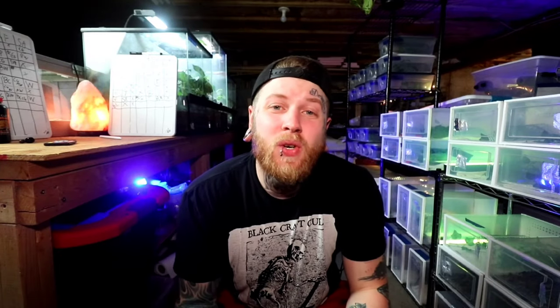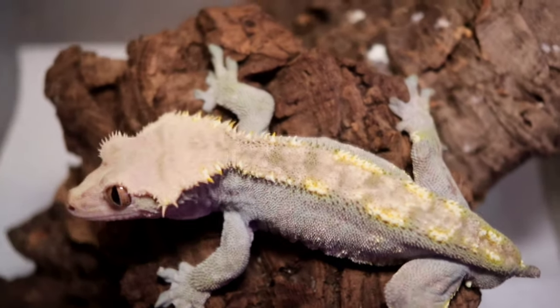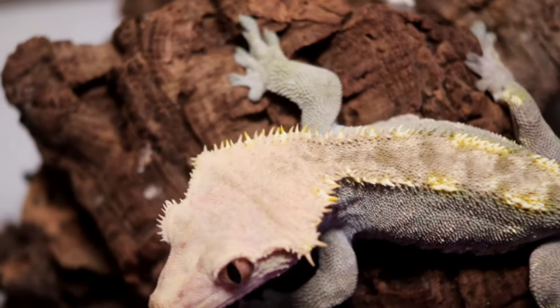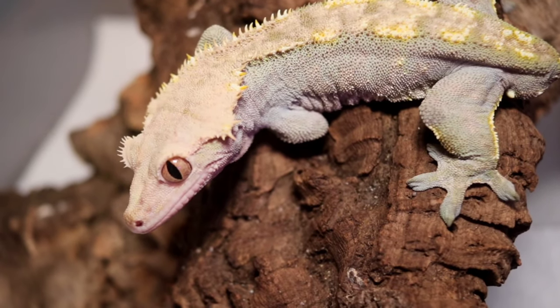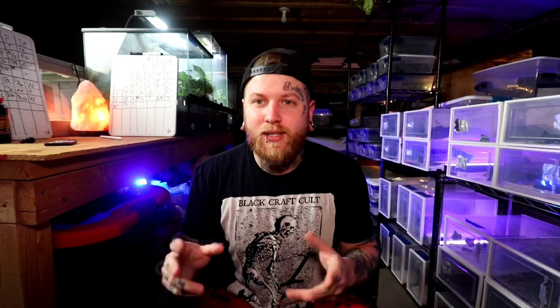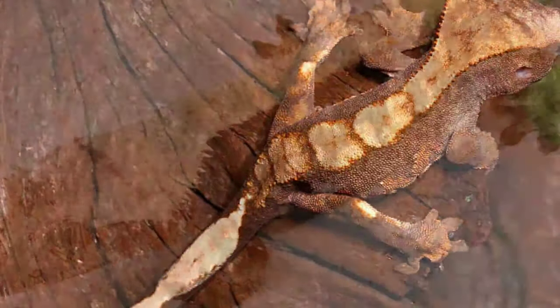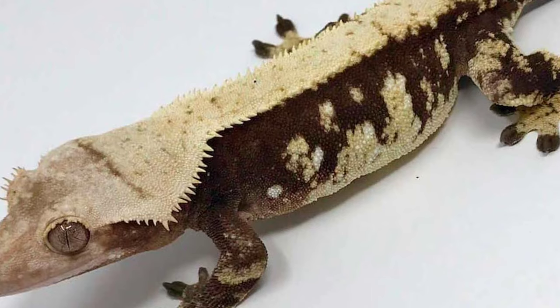Number four is the harlequin crested gecko. The harlequin is going to be a little bit similar to the flame, but we're gonna add on to that. While a flame has that contrasting color — usually a dark base with a bright contrasting dorsal — a harlequin takes that further by also having pattern on the side dorsals and limbs. That's going to be the biggest key difference: the flame only has that top dorsal and a dark base, whereas a harlequin has the top dorsal and dark base but also patterning going down the side dorsals and limbs. People like to say the harlequin is the upgraded flame crested gecko.